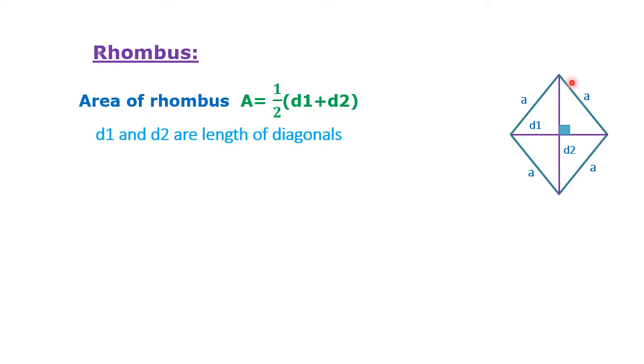Rhombus. Area of rhombus A equals half times D1 plus D2, where D1 and D2 are the lengths of the diagonals. When base and height are given, area A equals B times H.